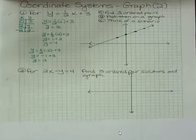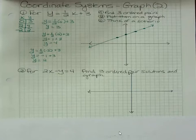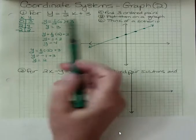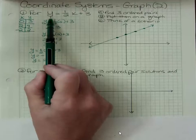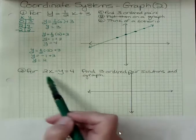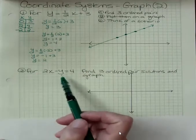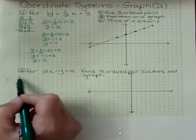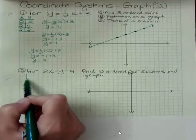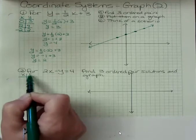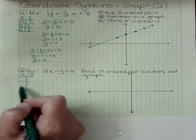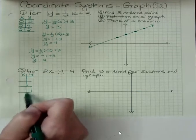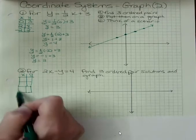You should really try to do this one on your own and then come back and check in. I'm going to find three ordered pairs. Notice that this one doesn't have, this one was Y by itself and this one, the X and Y are together. This is a different format, but we can still do the same thing.